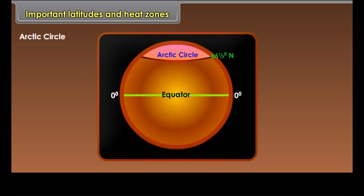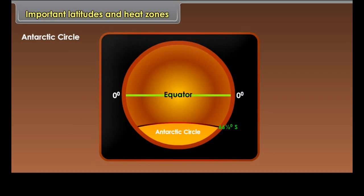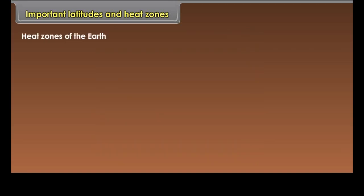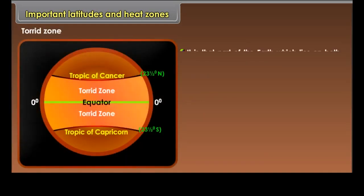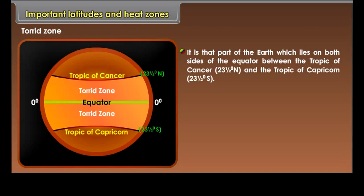The Arctic Circle lies at 66 and a half degrees north of the equator. The Antarctic Circle lies at 66 and a half degrees south of the equator. Heat Zones of the Earth: The important zones of the Earth are the Torrid Zone, Temperate Zone, and Frigid Zone. The Torrid Zone is that part of the Earth which lies on both sides of the equator, between the Tropic of Cancer at 23 and a half degrees north and the Tropic of Capricorn at 23 and a half degrees south.